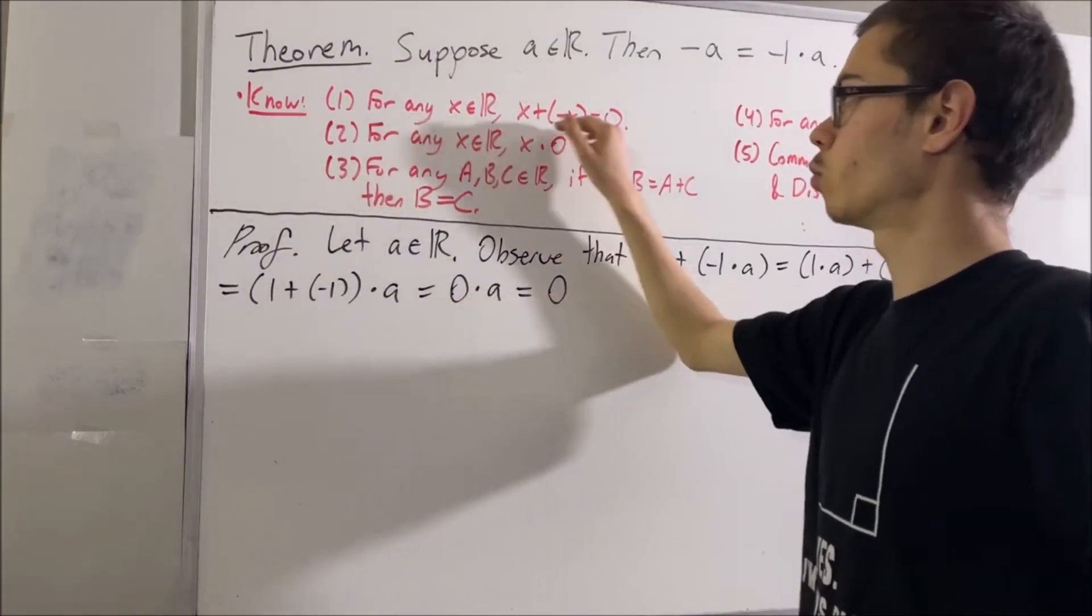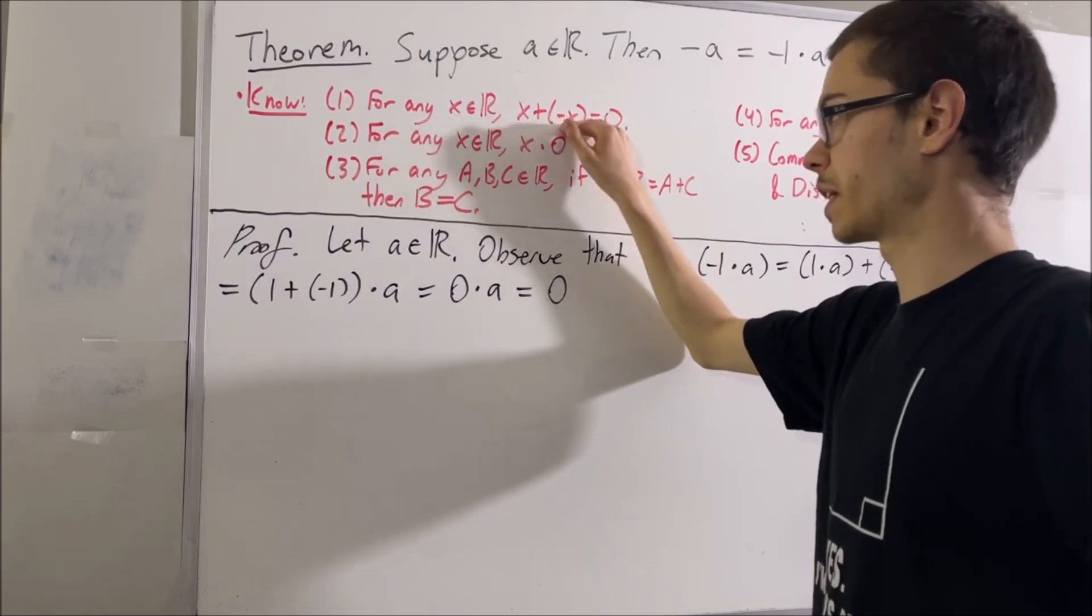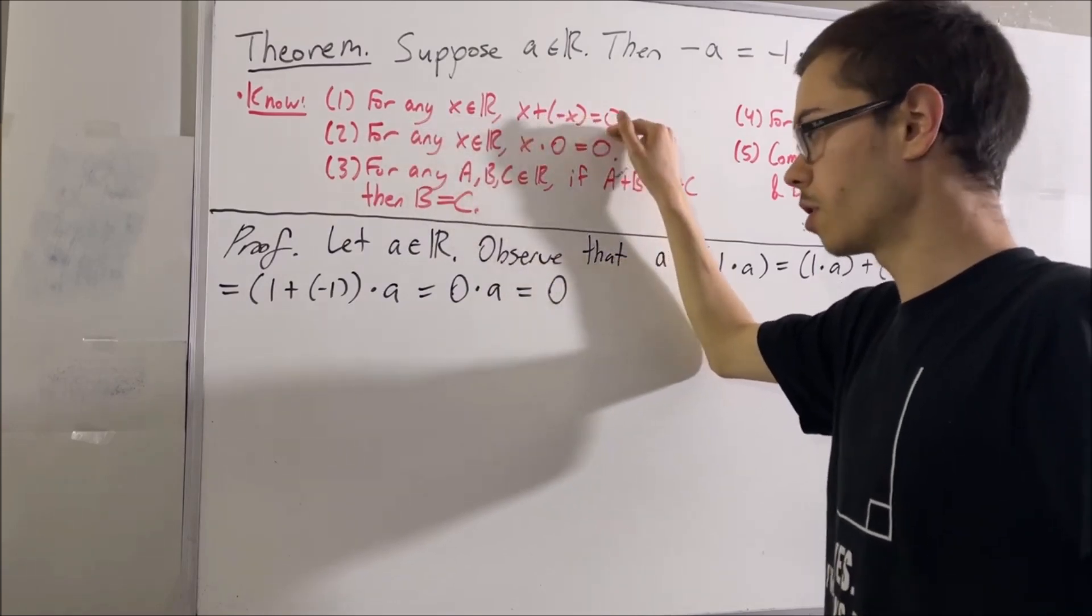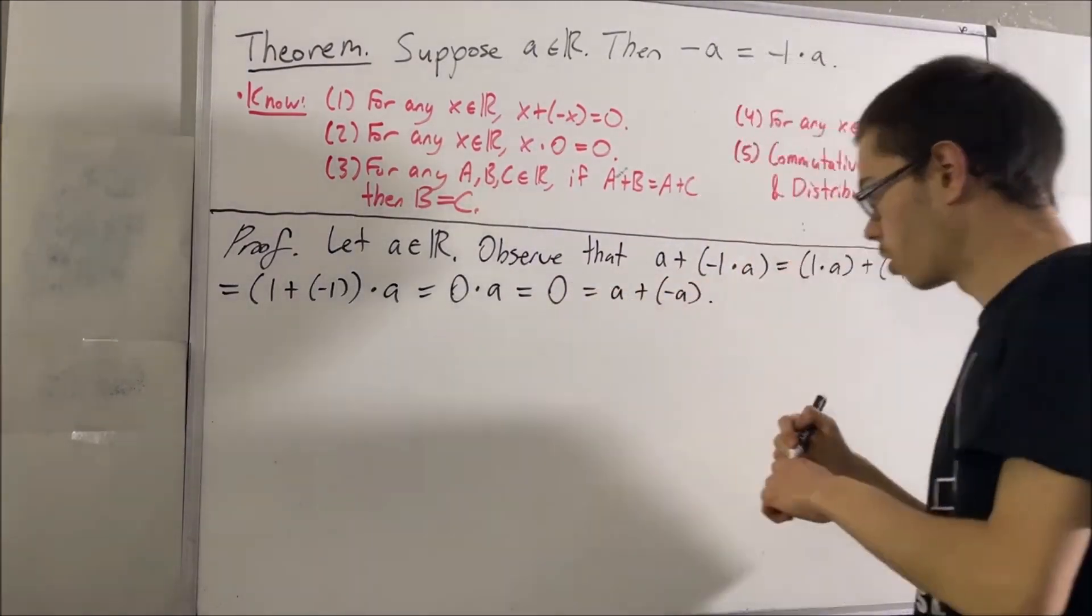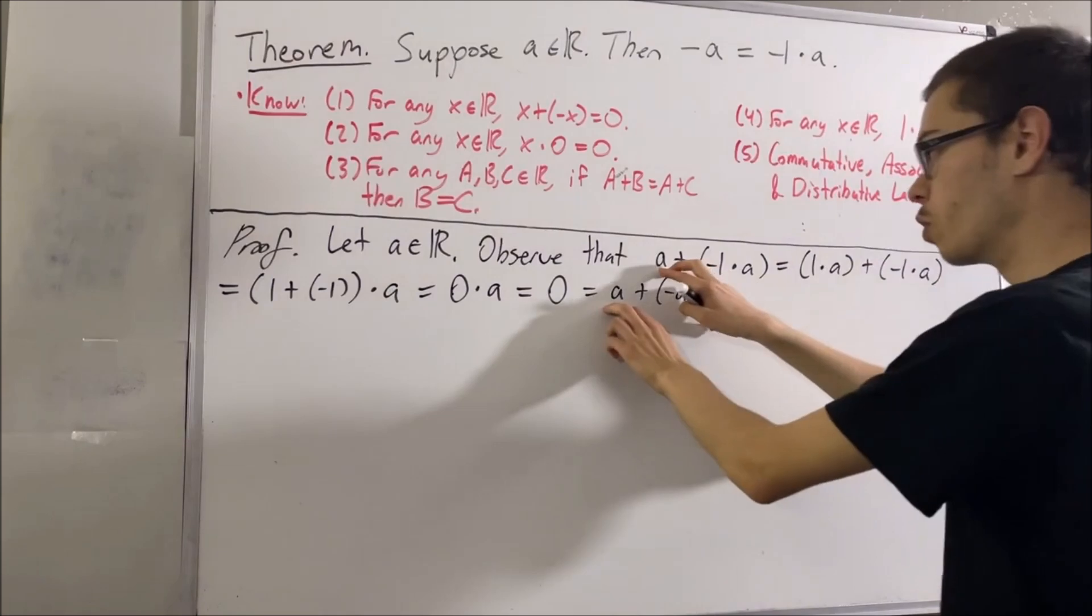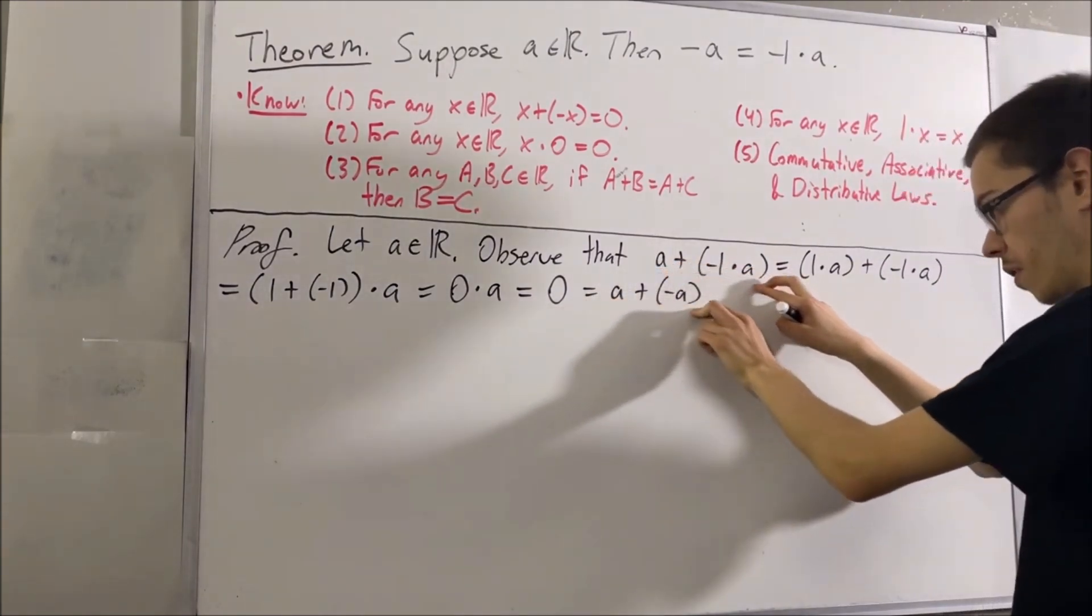And again, from fact number 1, we know any number plus its negative is equal to 0. So, we can replace 0 with a plus the negative of a. And so, notice what we have here. We have shown that these two expressions are equal to each other.